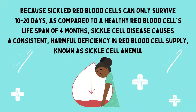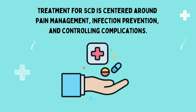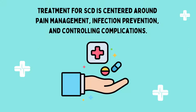Because sickled red blood cells can only survive 10 to 20 days, compared to a healthy red blood cell's lifespan of four months, sickle cell disease causes a consistent, harmful deficiency in red blood cell supply, known as sickle cell anemia.